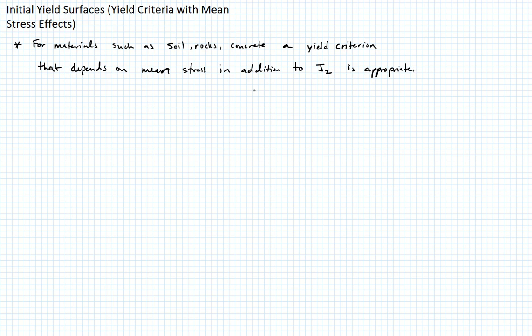So for materials such as soil, rocks, maybe concrete, a yield criterion that depends on mean stress in addition to J2 is appropriate. Here we're going to talk briefly about three common yield criterion that incorporate this. The most common is something called the Mohr-Coulomb criterion.